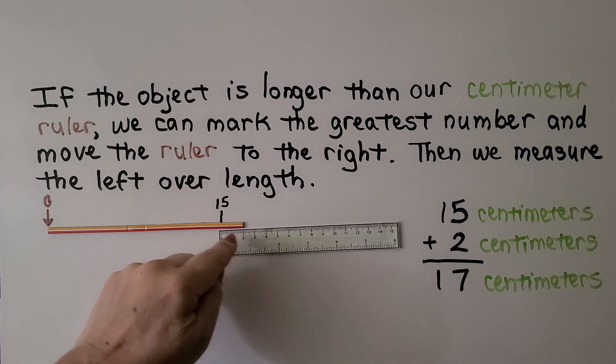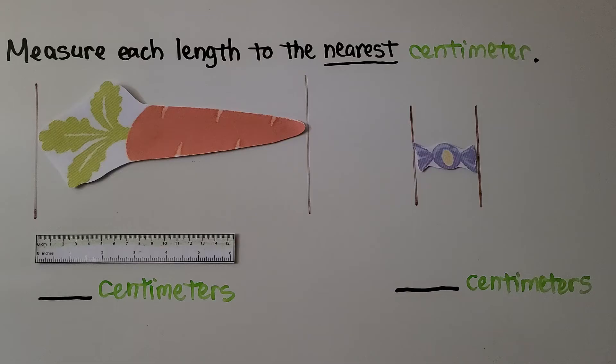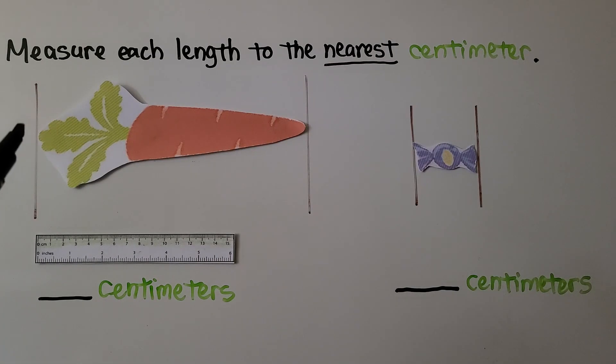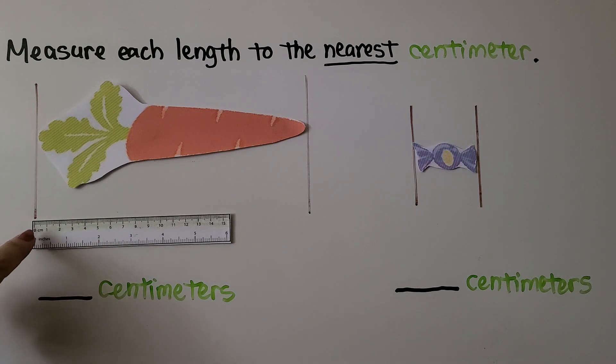Here it's telling us to measure each length to the nearest centimeter. So we're going to go from the tip of this carrot to the tip of the leaves, and we can draw a straight line to help us. I believe in the book it might already have the lines. What we can do is start with the line here at zero.